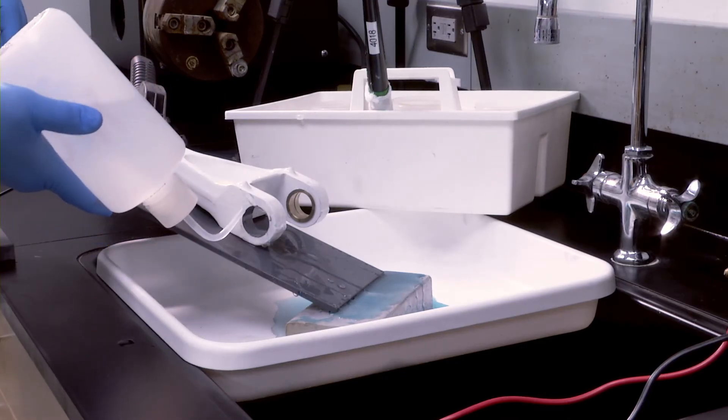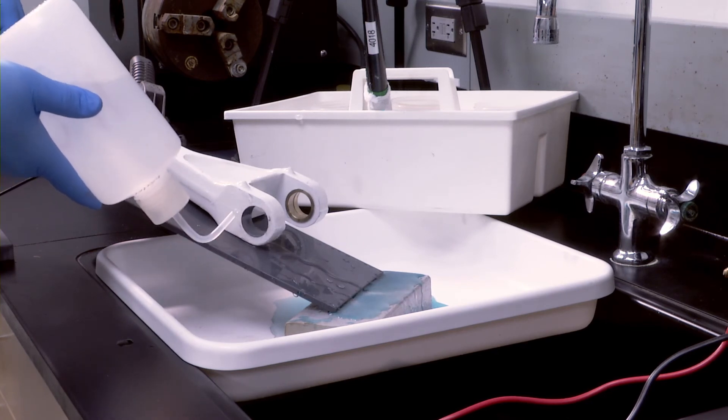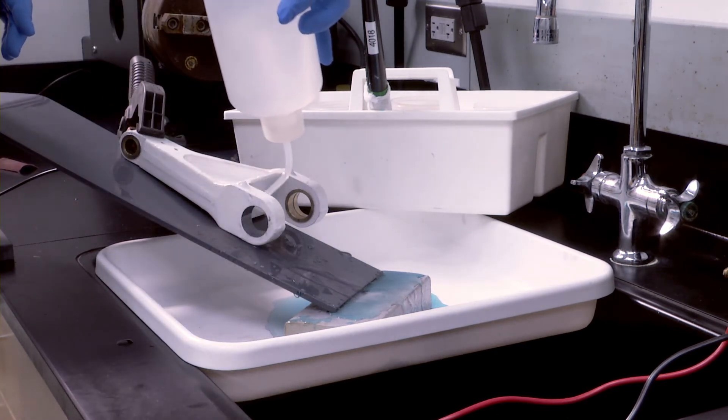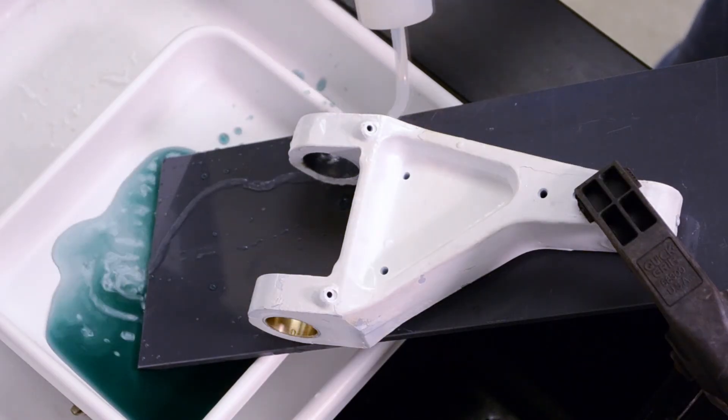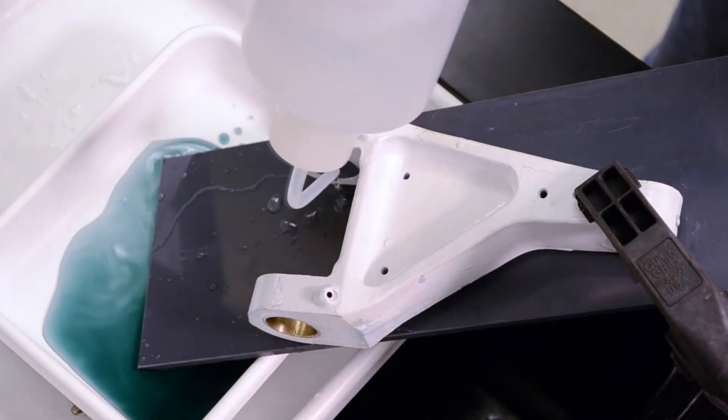After plating, the part is thoroughly rinsed with deionized water. As you can see, very little waste is generated with this operation. For an area of this size, typically less than 100 milliliters of waste is generated.